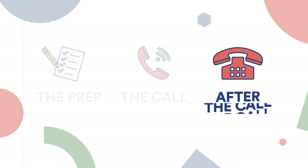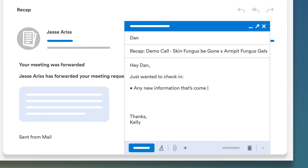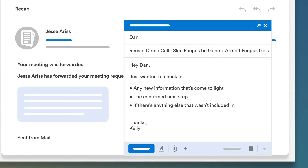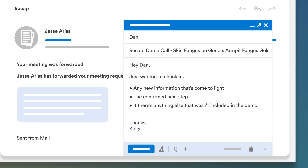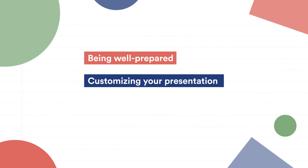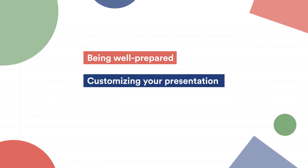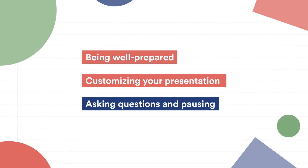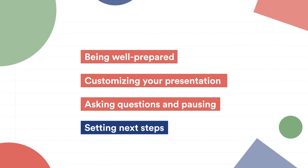Once the demo is finished, the last step is to send each attendee their own recap email. This is going to open up a whole lot of multi-threading so you can have lots of conversations on the side and keep each of your new stakeholders engaged. That email should include any new information that's come to light, the confirmed next step, and ask if there's anything else they still have questions about. And that's it — you ran a kick-ass demo by being well prepared, customizing your presentation to your stakeholders' needs, asking questions and pausing throughout rather than reading a script, and by setting next steps so that your deal doesn't fizzle out.